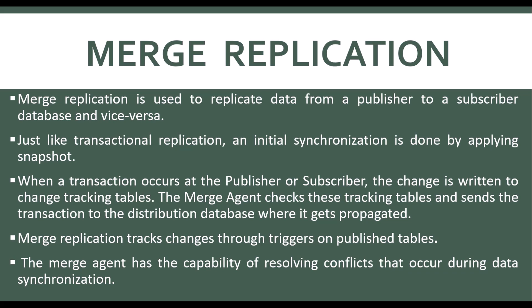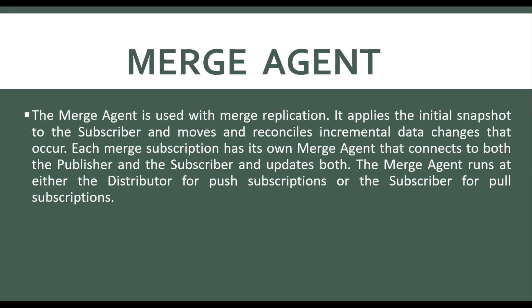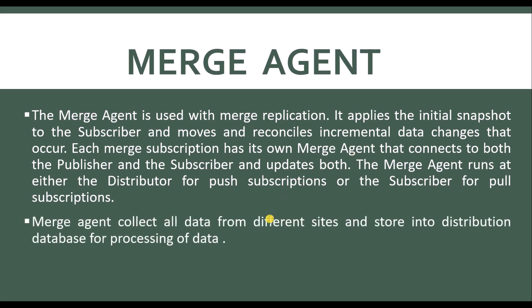In merge replication we have a new agent called the merge agent. This merge agent tracks changes through triggers on published tables and also has the capability of resolving conflicts that occur during data changes. The merge agent applies the initial snapshot and then moves and reconciles incremental data changes. Each merge subscription has its own merge agent that connects to both the publisher and subscriber and updates both. It runs at the distributor for push subscriptions, or at the subscriber for pull subscriptions. It collects all data from different sites and stores it into the distribution database for processing.